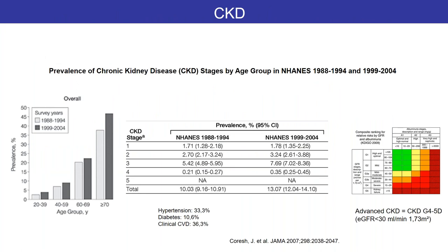CKD is one of the epidemics of these ages. Nowadays up to 10 to 15% of all individuals have some kind of chronic kidney disease. As you can see on this graph, it's mainly a disease of the elderly - in individuals above 70 years old, up to 35-40% have some kind of chronic kidney disease. It's also a disease still increasing in prevalence, as you can see from NHANES data comparing 1988-1994 with later waves. Importantly, we can now categorize CKD into five categories according to estimated GFR from G1 to G5, and also grade albuminuria, because both the degree of kidney dysfunction and albuminuria have impact on patient outcomes.